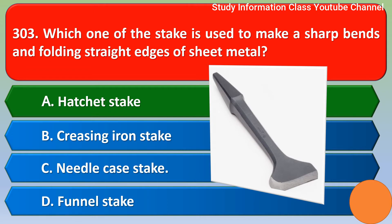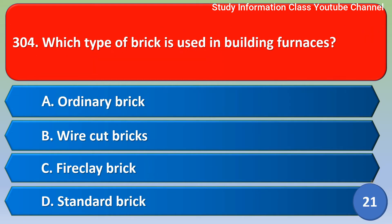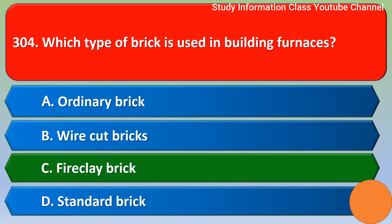Next question: which type of brick is used in building furnaces? Option A: ordinary brick, Option B: wire cut brick, Option C: fire clay brick, Option D: standard brick. For this question, the right answer is Option C, fire clay brick. Option C is the right answer.